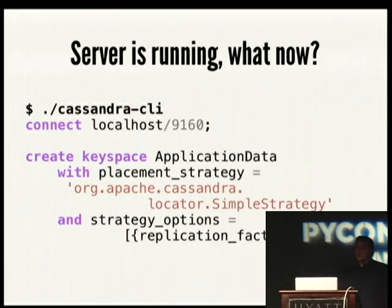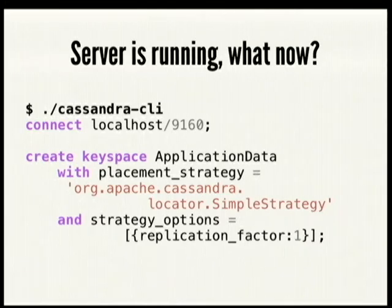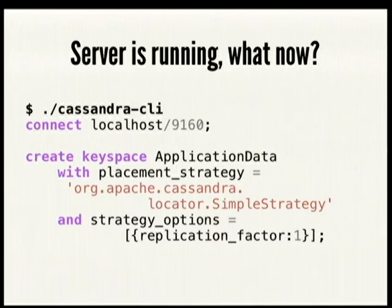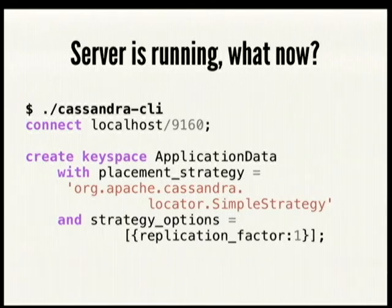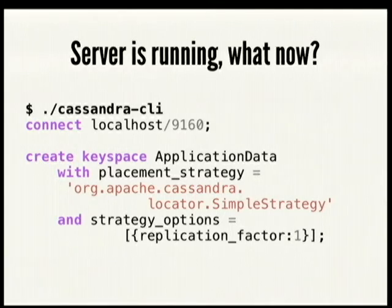Now that you've got it up and running, the first thing you need to do is connect and set up some key spaces and column families. There's a command line interface tool that ships with the distribution. You start up the command line tool, connect to it, and create your key space. When you create a key space, you also specify a placement strategy, which says how Cassandra is going to store that data across the cluster — basically where it's going to put each key.